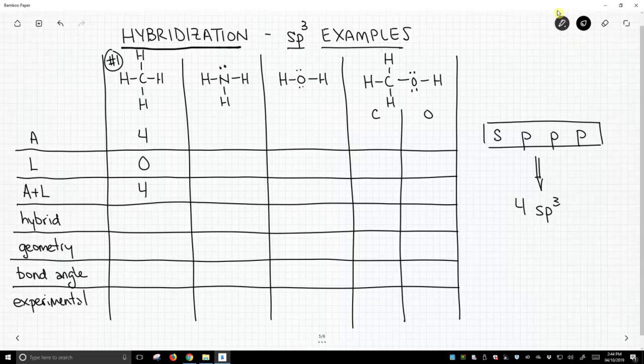If A plus L equals four, we need sp3 hybridization. The geometry of an sp3 hybridized atom with four attached atoms is tetrahedral. The predicted bond angle is approximately 109.5 and in fact the experimental bond angle is also 109.5, so great match between predicted and experimental value.